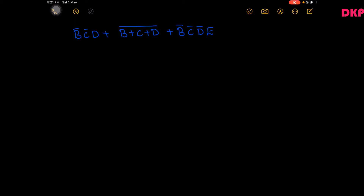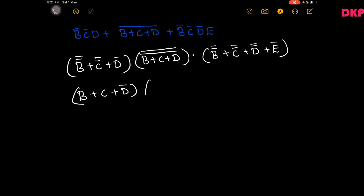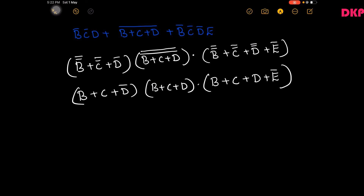Let us see another typical example: b̄c̄d + b̄c̄d̄ (whole bar) + b̄c̄d̄e. The complement of the first term b̄c̄d is b+c+d̄. The complement of b̄c̄d̄ (whole bar) is b+c+d. The complement of b̄c̄d̄e is b+c+d+ē. So this is the complement of the given expression.